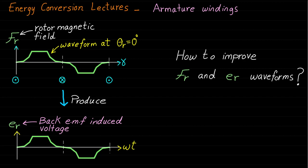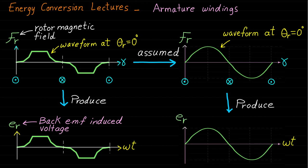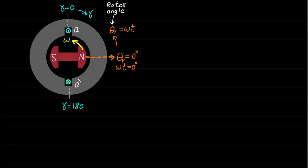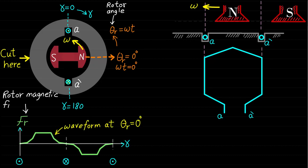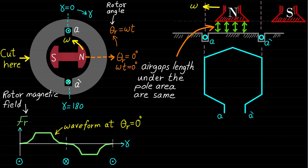In a previous lecture, we assumed that the rotor magnetic field distribution and the back EMF-induced voltage are sinusoidal waveforms. Now, assume we have a two-pole, single-phase synchronous machine with salient pole rotor and concentrated armature windings represented by phase A coil. This figure shows the same machine if we flatten the machine. We mentioned in a previous lecture that the shape of the rotor magnetic field distribution of this machine looks like a trapezoidal waveform. The reason for this trapezoidal waveform is that the air gaps under the area of the rotor poles are equal or the same.